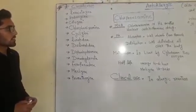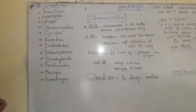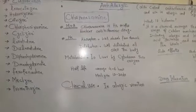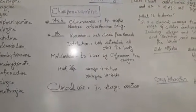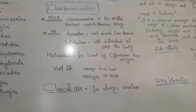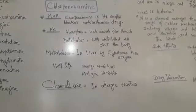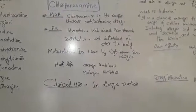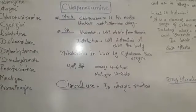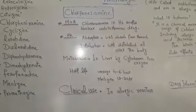We are going to discuss the mechanism of action of chlorpheniramine, which is the most common anti-allergic drug. Its mechanism of action is that it blocks the H1 receptor and blocks the release of histamine. Chlorpheniramine is an anti-histaminic drug that acts on the H1 receptor.